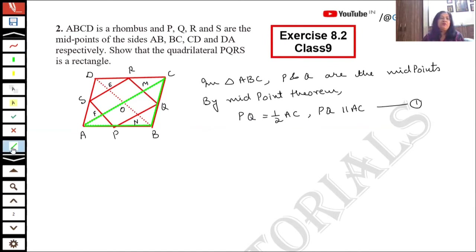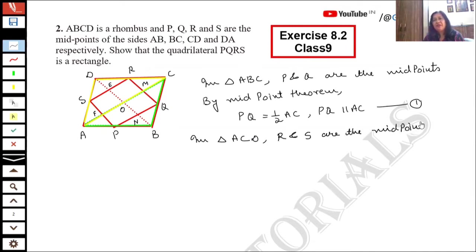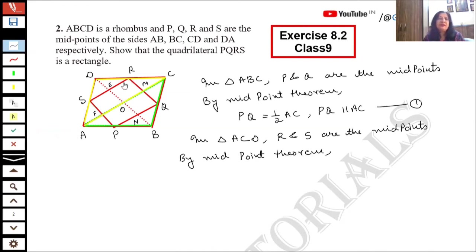After this, we consider triangle ACD. In triangle ACD, R and S are the midpoints. By the midpoint theorem, SR is parallel to AC and SR is equal to half of AC. This is our second result.